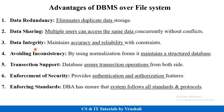Next is data integrity. Database management systems maintain accuracy, reliability, and valid data in a database. For that purpose, they use different types of constraints. Next is avoiding inconsistency — database management systems use different types of normalization forms to maintain the structure of a particular database.